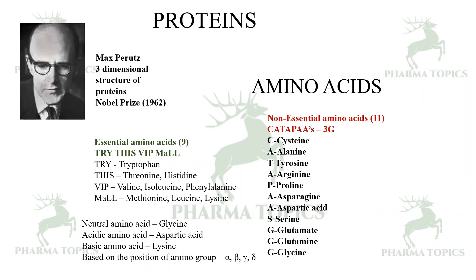Amino acids are also sub-classified based on acidity — they may be acidic, neutral, or basic amino acids. Based on substitutions at the alpha carbon, they may be classified as alpha, beta, gamma, or delta amino acids.